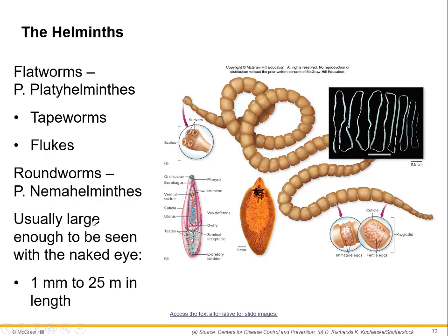Nematodes, also called roundworms, are really long roundworms that are not segmented. They can range from one millimeter to 25 meters in length. Tapeworms can also be very long — they hook on with suckers to the intestines and will keep adding segments as long as food is being provided. They can take up a lot of the small or large intestines of the mammals they infect. They typically infect any kind of mammal — whales, pigs, and dogs can all get them.